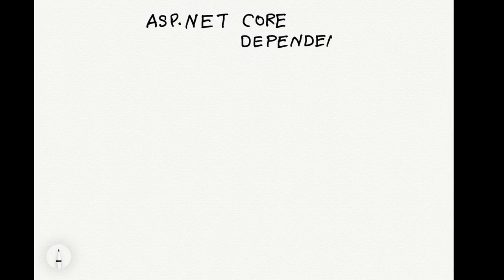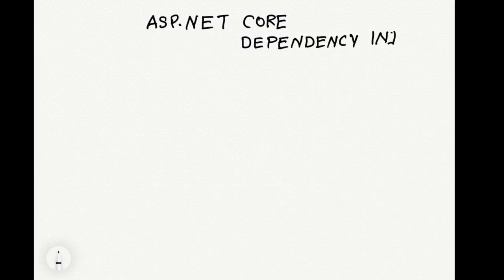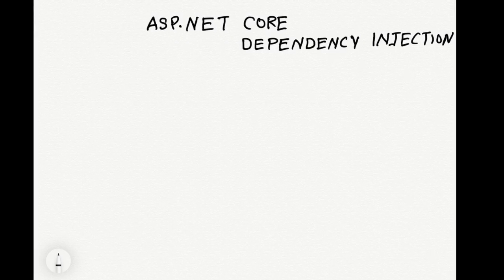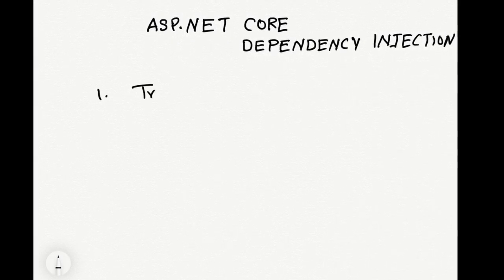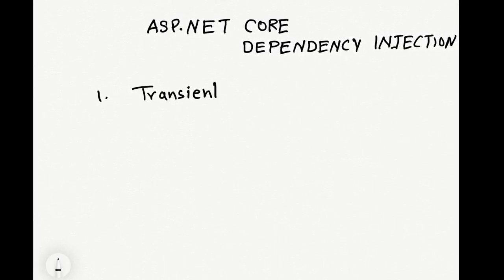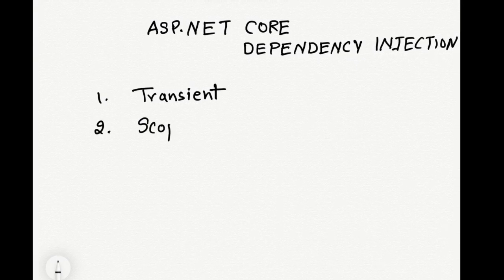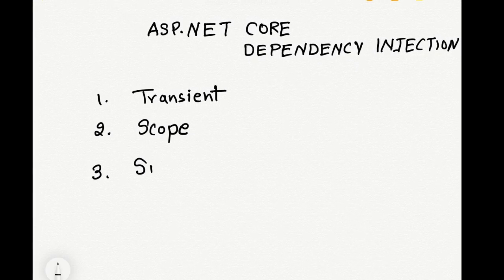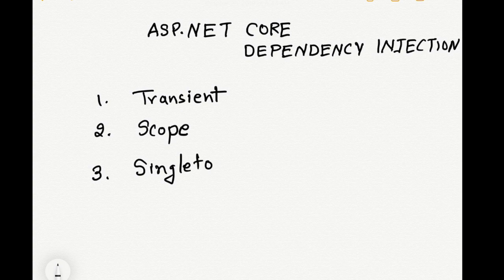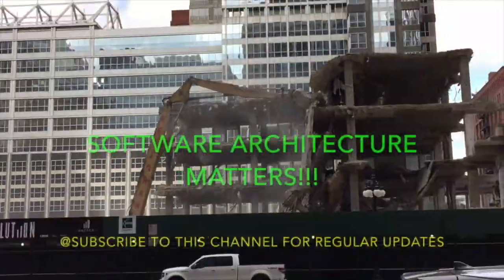What are the different lifetime scopes of the services created from ASP.NET Core dependency injection? The three different lifetime scopes are transient, scoped, and singleton. Let's discuss each lifetime in more detail.